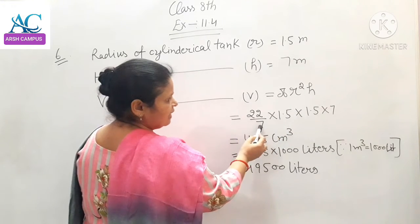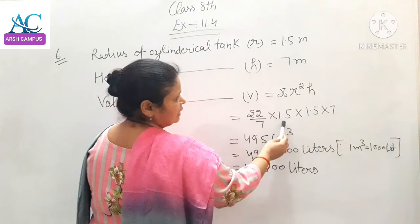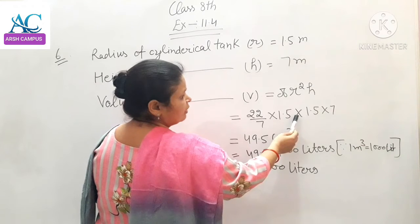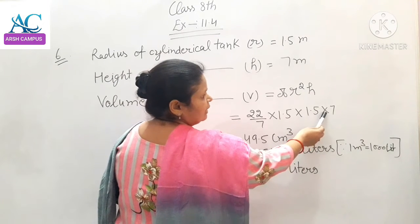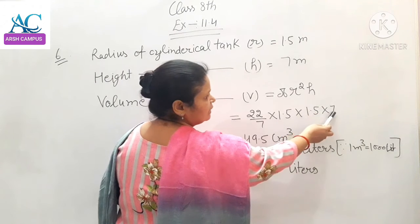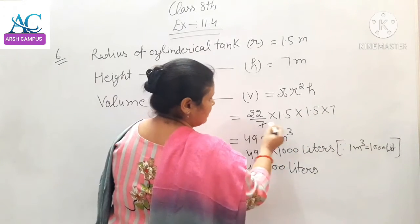Pi 22 by 7 into radius 1.5 meters, 1.5 multiply 1.5 into height 7 meters. 7 and 7 cancel.